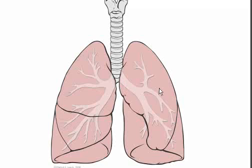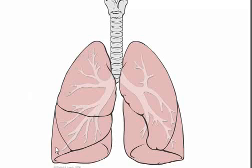This is the left lung — left superior lobe, left inferior lobe — this is the left apex, right apex. Here: right superior lobe, right middle lobe, and right inferior lobe. This is how the diaphragm pulls and pushes the lung up and down.